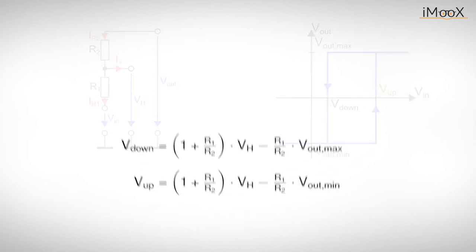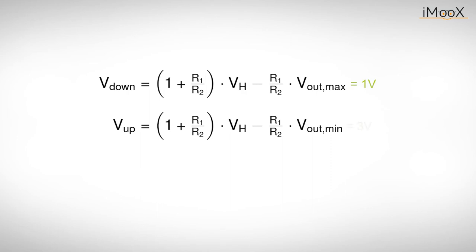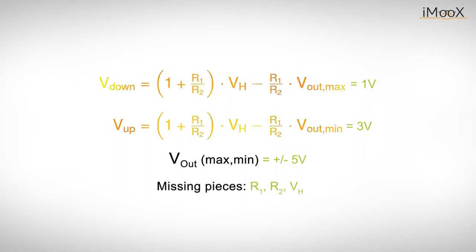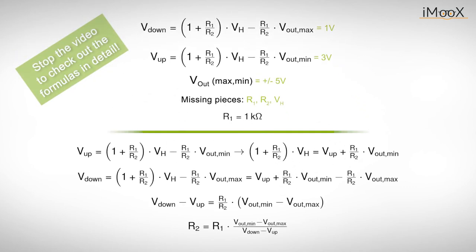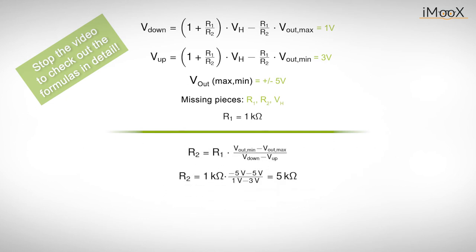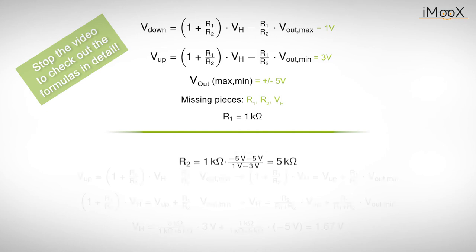As a small example, let's design a non-inverting Schmitt trigger with V_down equals 1 volt and V_up equals 3 volts. The maximum and minimum output voltages are plus minus 5 volts. The missing pieces are the two resistors R1 and R2 and the voltage V_h. We already derived the equations for the trigger levels. Now we have three unknown quantities, but only two equations. That's a problem, but a closer look on the equations reveals that only the relation of the resistors is important and not their absolute values. This means we just pick one of the resistors. Let's select R1 equals 1 K. The rest is just a little bit of math. The second resistor has to be 5 K, and the voltage equals 1.67 volts.